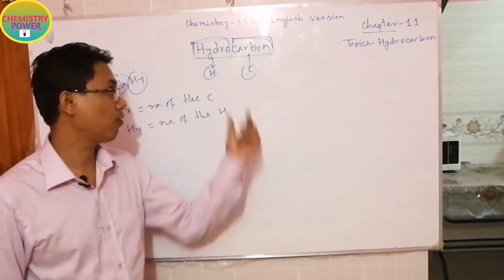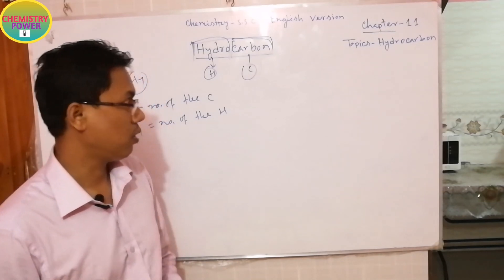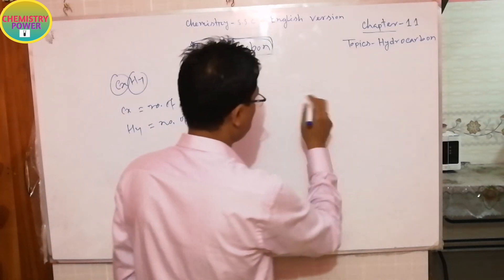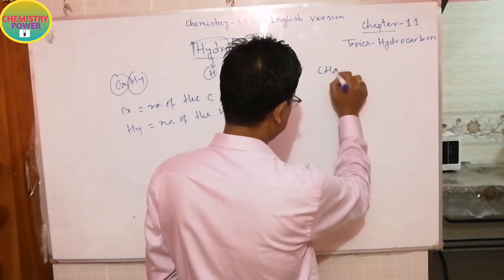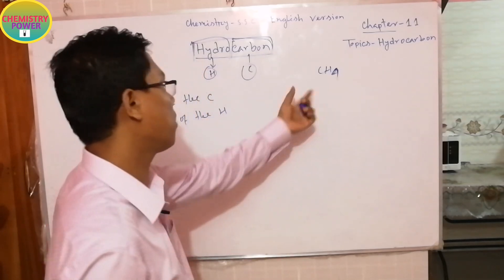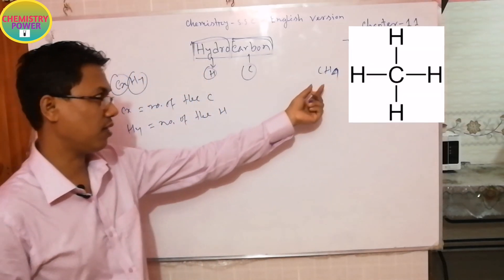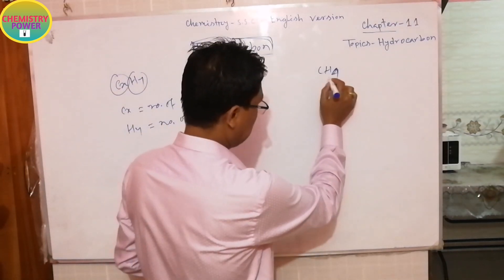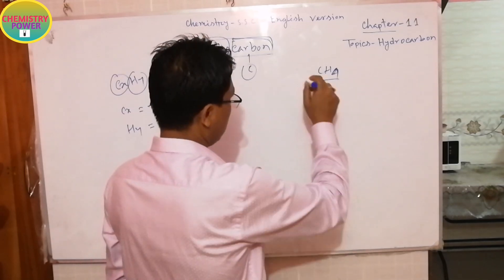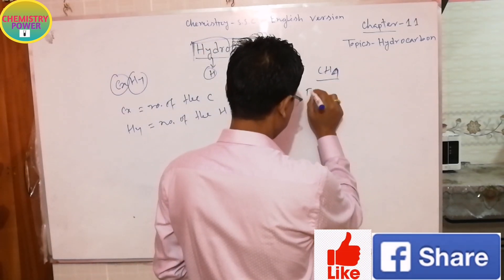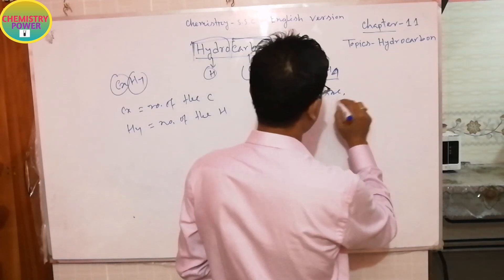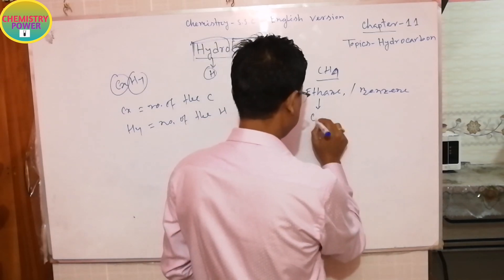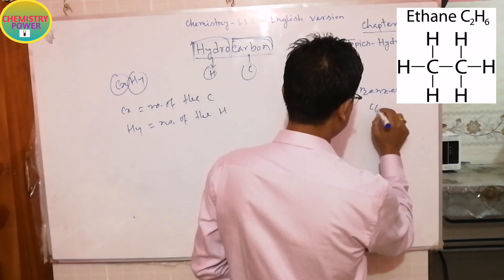There are many examples of hydrocarbons in the world. First, methane — its formula is CH₄. This is the structural formula for methane, which is the most important component in our daily household work because it is used for cooking. Another example is ethane, with the structural formula C₂H₆, and benzene, which is C₆H₆.